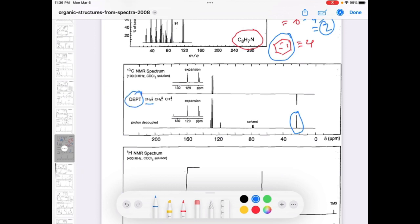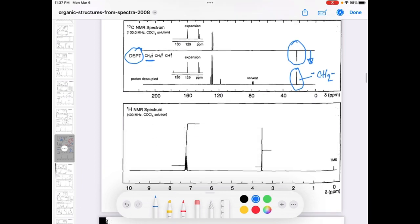In the DEPT, if you see, look at the DEPT. We always know the DEPT always gives you the CH2 carbon downward. See, this carbon is giving downward, so we can say this carbon is CH2 peak, like CH2 carbon. Now, the benzene ring, how is that benzene ring there?